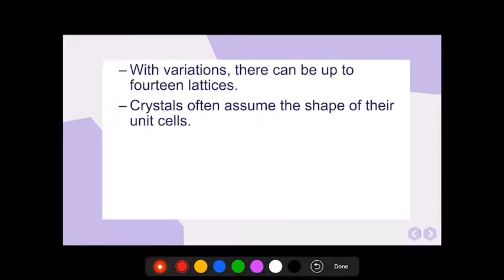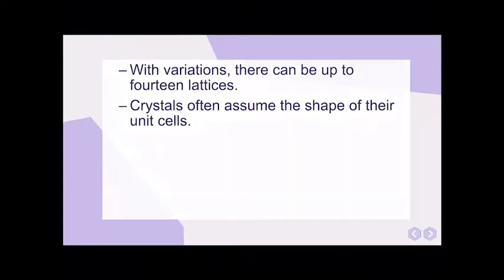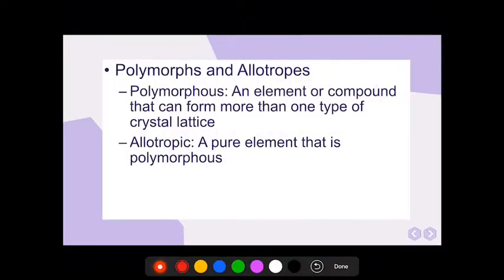There are variations within crystal lattices. There can be up to 14 lattices on top of each other. We're not going to get that complex. But the crystals often assume the shape of their unit cell, just like we had on the previous slide. The basic unit cell was a cubic shape, so the structure of the crystal lattice or the crystals themselves would be also cubic in nature.